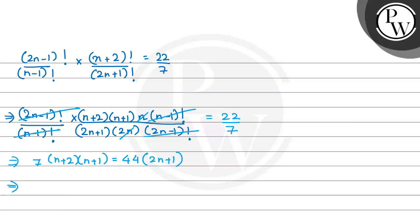So I can write 7 multiplied n square plus n plus 2n, directly 3n plus 2 is equal to 88n plus 44. Then multiply, 7n square plus 21n plus 14 is equal to 88n plus 44. Now transpose everything. So 7n square minus 67n and 14 minus 44 is minus 30 is equal to 0.